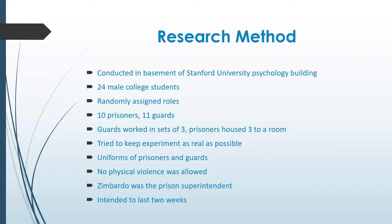The experiment was conducted in a mock prison created in the basement of Stanford University's Psychology Building. 75 people volunteered to participate, but only 24 male college students were selected. They were paid $15 per day. The men were randomly assigned to either the role of prisoner or guard. Two men were reserved and one dropped out, leaving 10 prisoners and 11 guards.